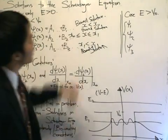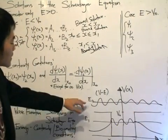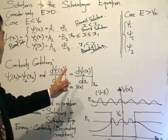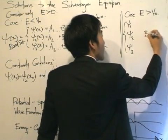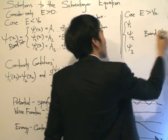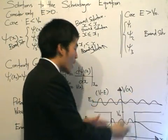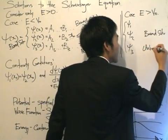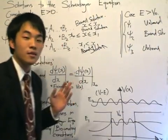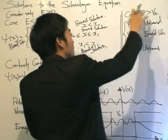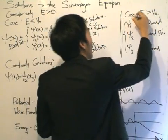What about the case where the energy is more than the potential? As we can see, this is going to be an unbound solution. Technically speaking, for the domains when x is between x0 and x1, psi2 is actually a bound solution because it's confined within that region. But for psi1 and psi3, it's going to be unbound — the particle can move from minus infinity to infinity. So for the case where the energy is more than the potential, it's going to be an unbound solution.